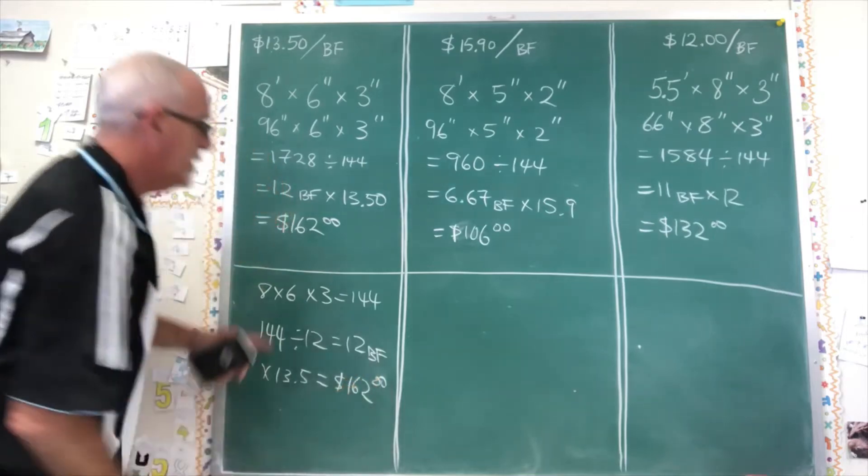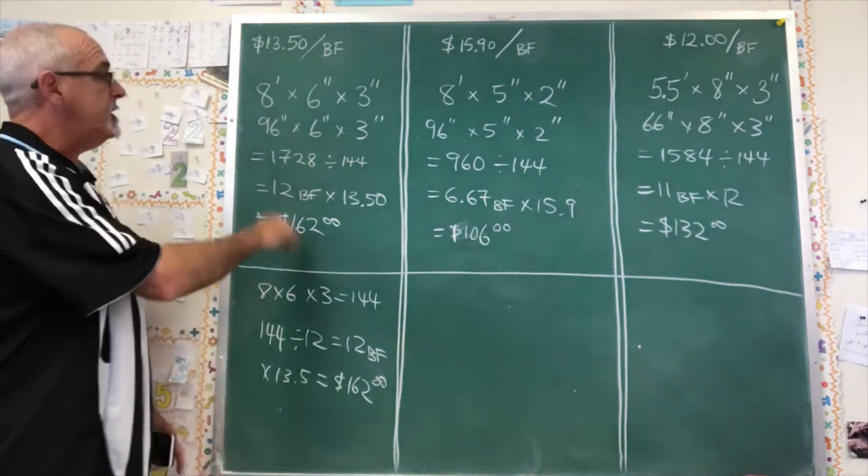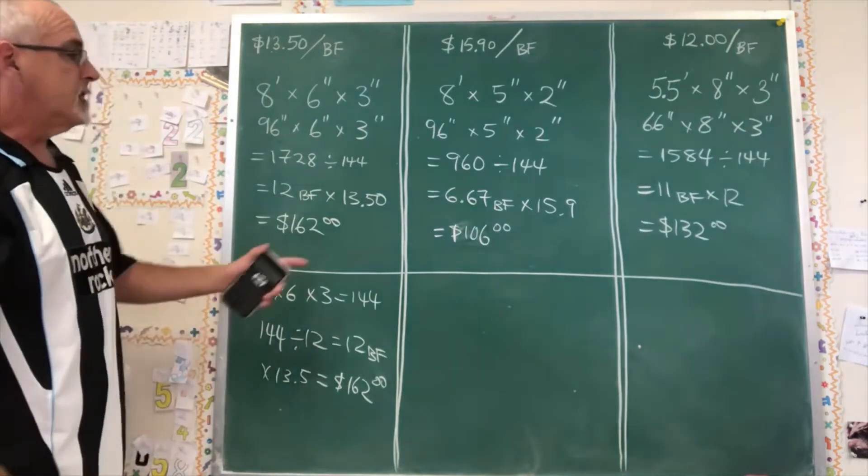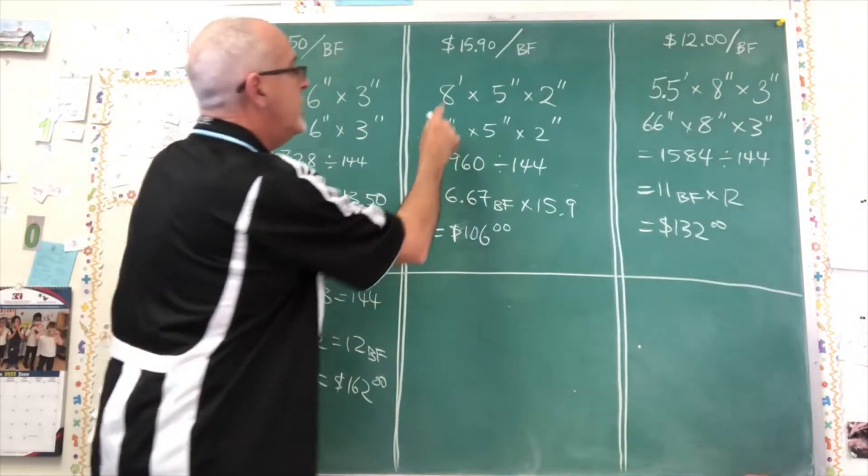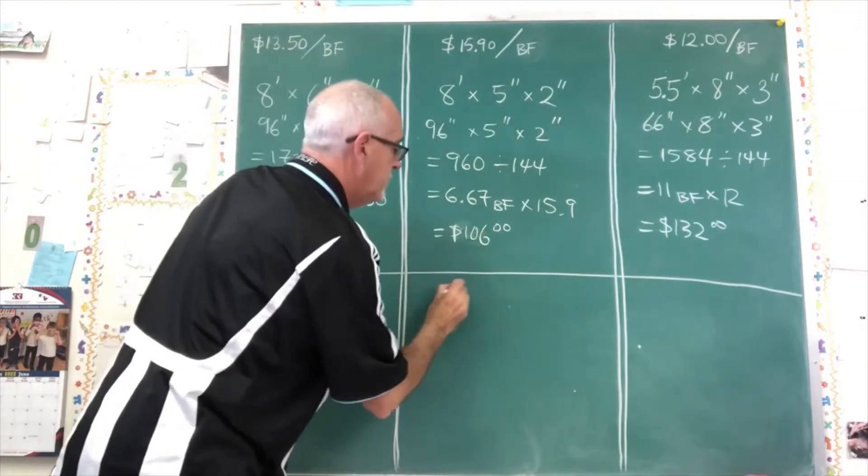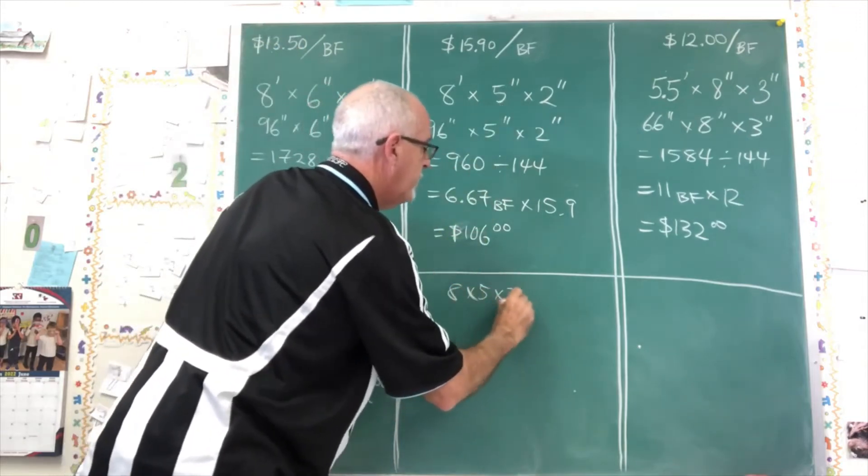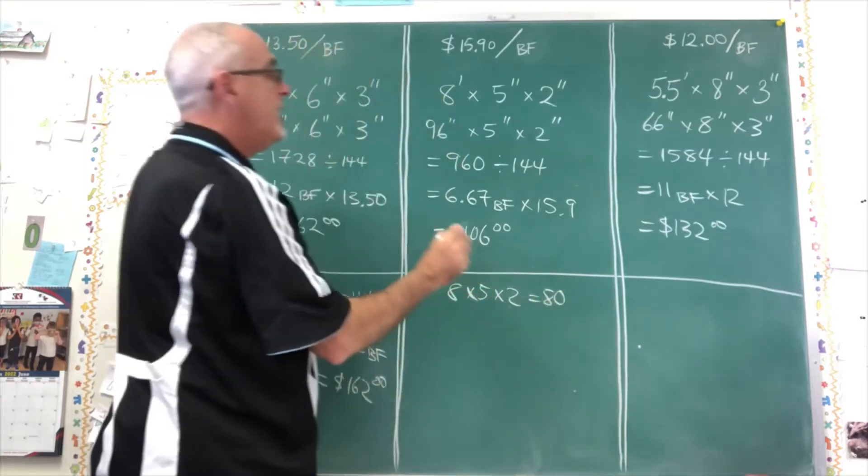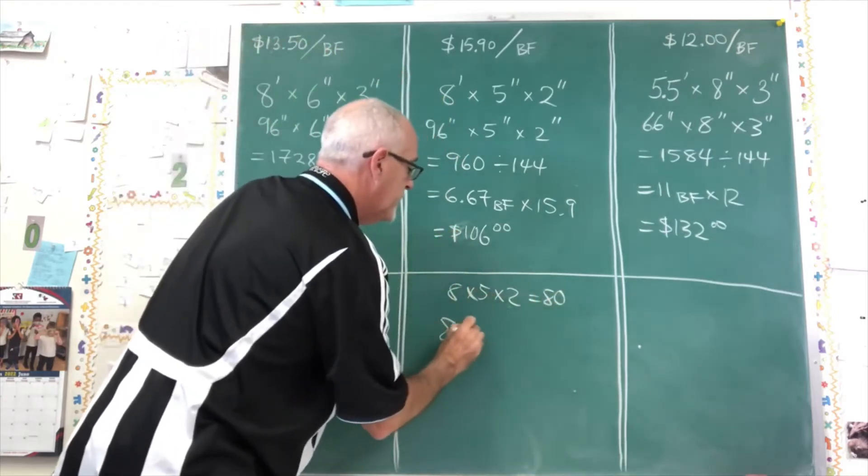I find this a little bit easier to do in my head because of the different way that I'm treating the length of the board. So let's try it with this one. We have 8 times 5 times 2. 5 times 2 is 10 times 8 is 80. I have 80.